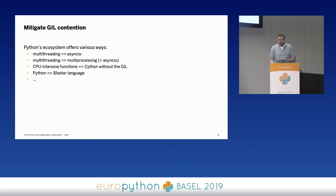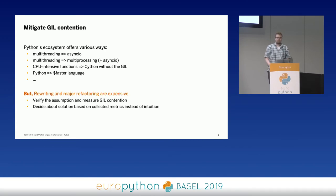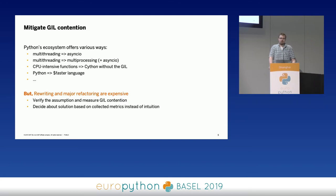In general, such rewrites or major refactors are super expensive. We're talking about a productive system powering a huge amount of workload, and we'd like to invest more time on new features. Handling performance problems is important, but we have to use the right approach to actually solve them. So we took one step back and decided to first analyze the problem — find out if it actually is GIL contention — and if we detect that, we can decide what kind of mitigation is the best one for our application.